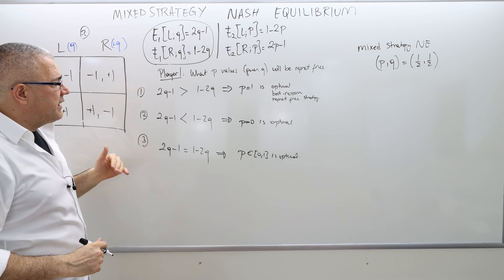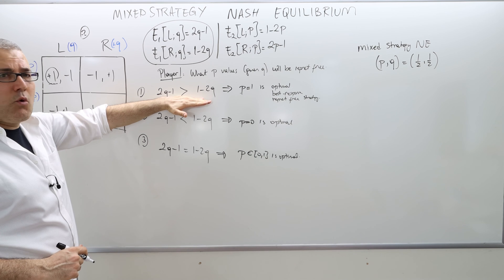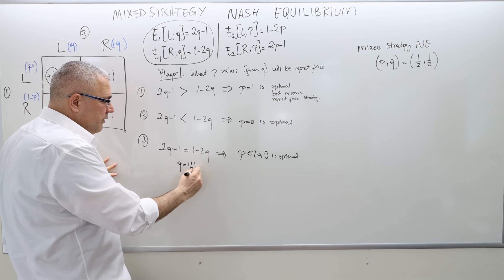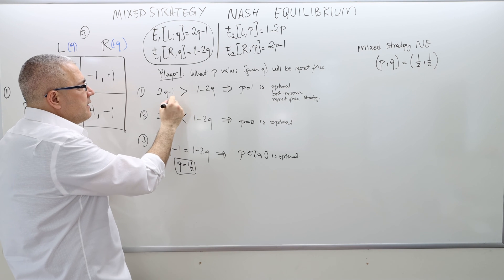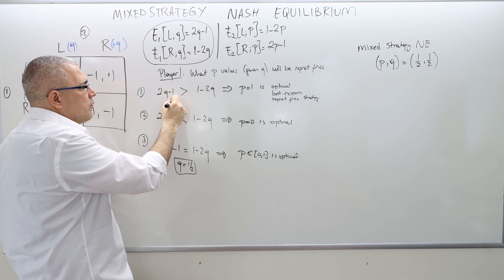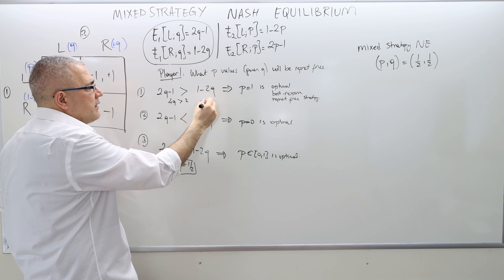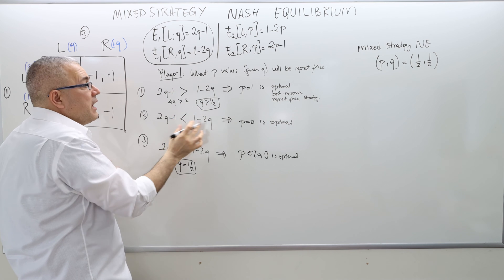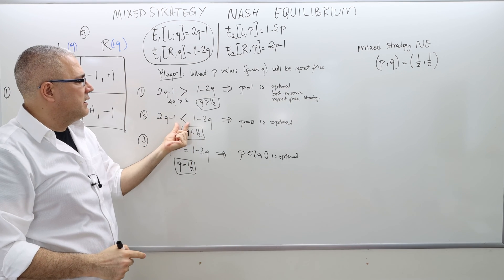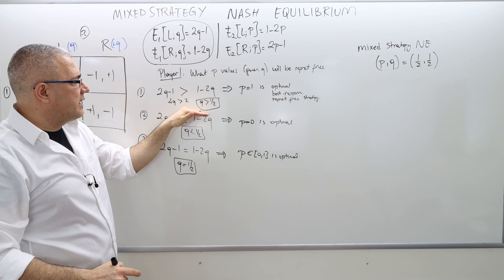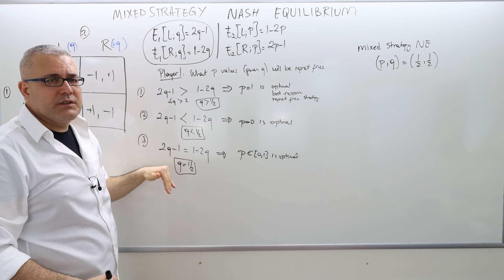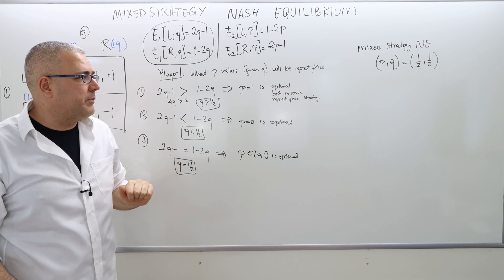Finally, if Q is such that you're indifferent between left and right — both arms give exactly the same expected payoff — then whether you put all chips on left, all on right, or 50-50 or 80-20 doesn't matter, because they all give the same expected payoff. Hence any P between zero and one is optimal. The threshold is Q equals one-half: if Q is greater than one-half, P equals one is optimal; if Q is less than one-half, P equals zero is optimal; otherwise any P is the best response.